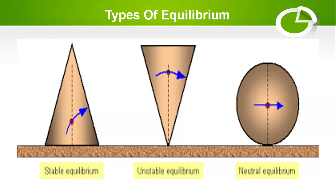For neutral equilibrium, it is like rolling a sphere — when you roll it, the center of gravity remains at its original position and does not change with whatever rotation occurs to the sphere. There is no change in the stability of the body. This is what we call neutral equilibrium.